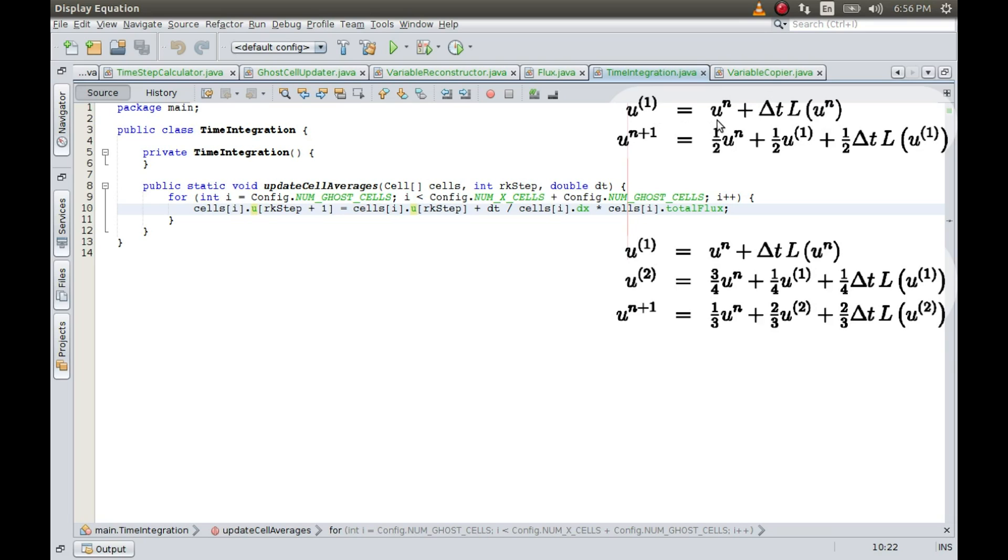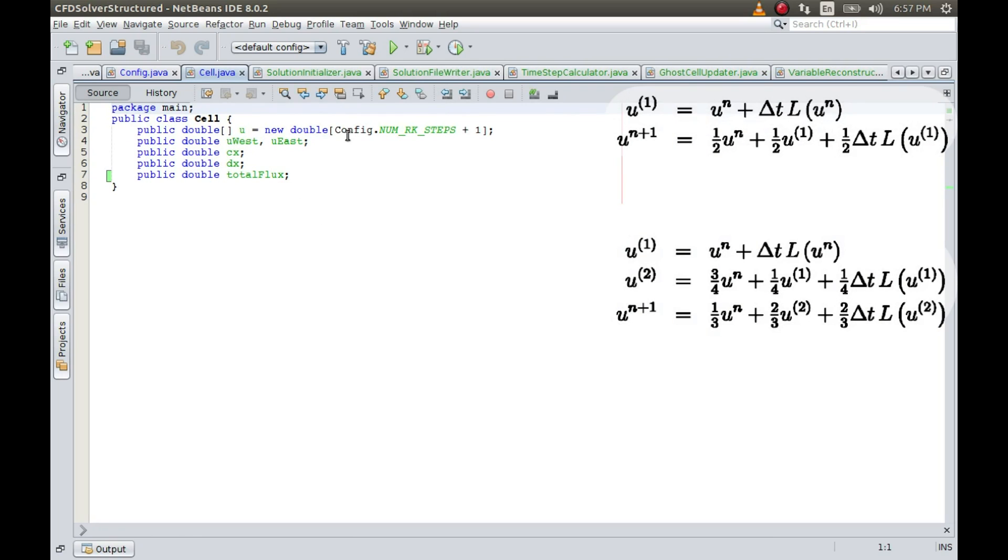You must remember we had defined the variable as an array, and the array size was equal to the number of RK steps plus one. If I can quickly go to the cell class, you can see the size of the array is equal to the number of RK steps plus one.